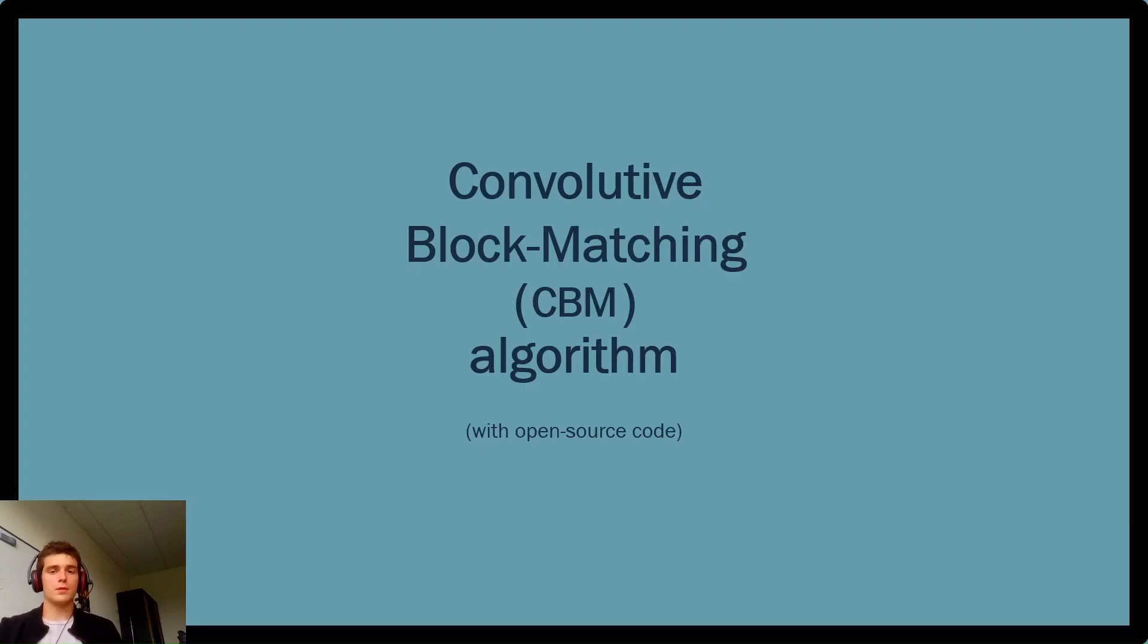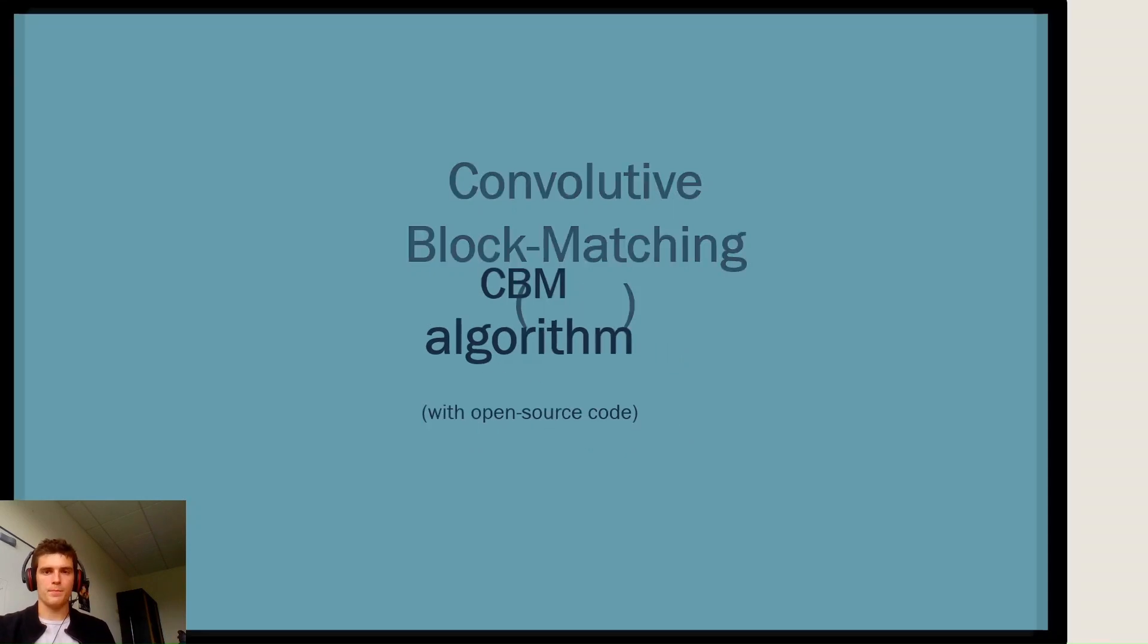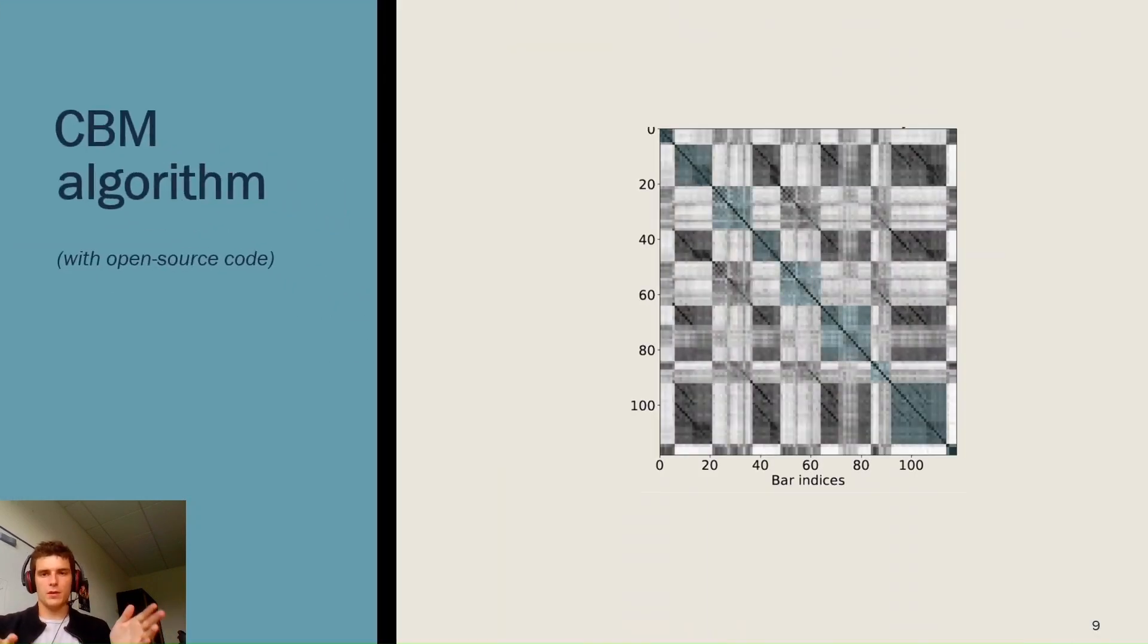In the end, the Convolutive Block Matching Segmentation Algorithm, or CBM, is applied on auto-similarity matrices. The main objective of the CBM is to find blocks of inner similarity on the diagonal of an auto-similarity, as presented here. This is probably the take-home message of this whole video.